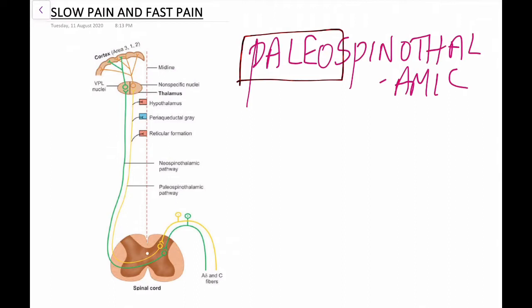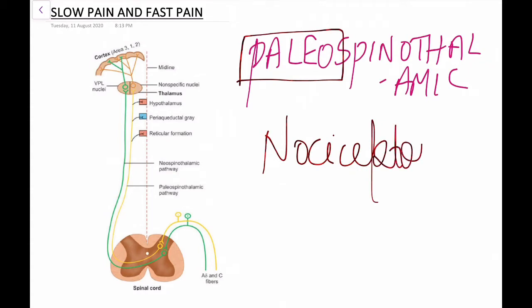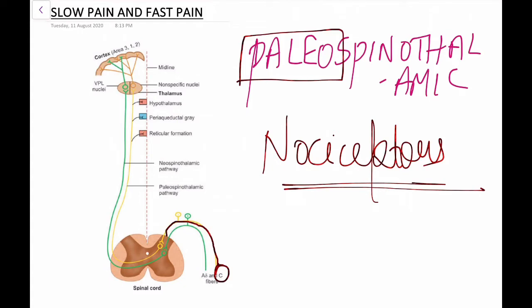The slow pain pathway is a phylogenetically older pathway. The receptors involved are nociceptors. The first-order neurons are the axons of unmyelinated C-fibers. These C-fiber axons enter the spinal cord via the dorsal root into the dorsal grey horn.